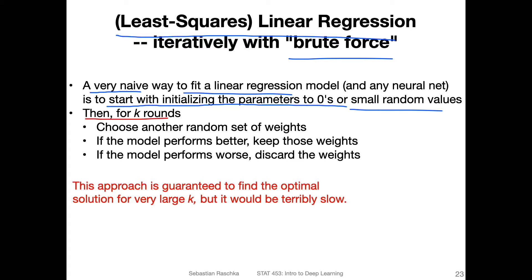For k rounds, we choose another random set of weights. And then we look at the predictions of the linear regression model. If the model performs better, we keep those weights. This is like an iteration k times. Every time we find better weights, we keep those. If the weights are worse, if the model with the weights performs worse, we discard them. So we only keep the weights if they're actually better than before.